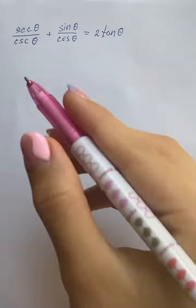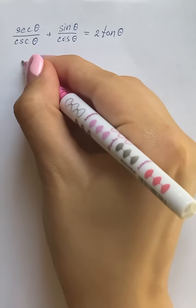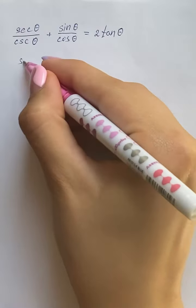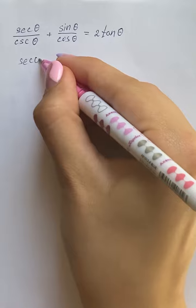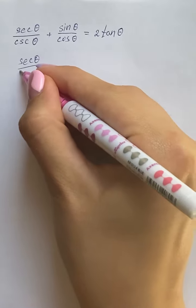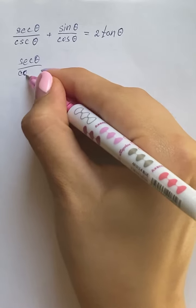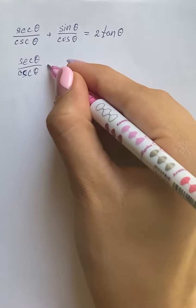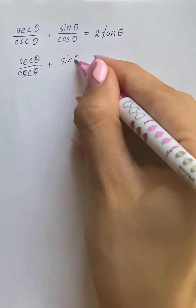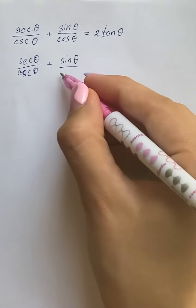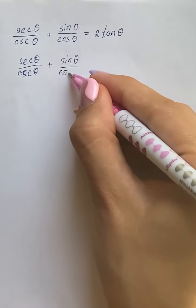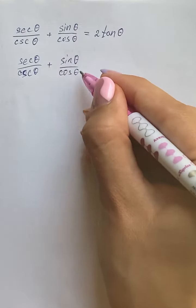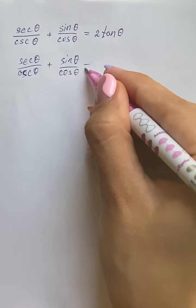We're going to work with the left-hand side, that's secant of theta over cosecant of theta, plus sine of theta over cosine of theta.